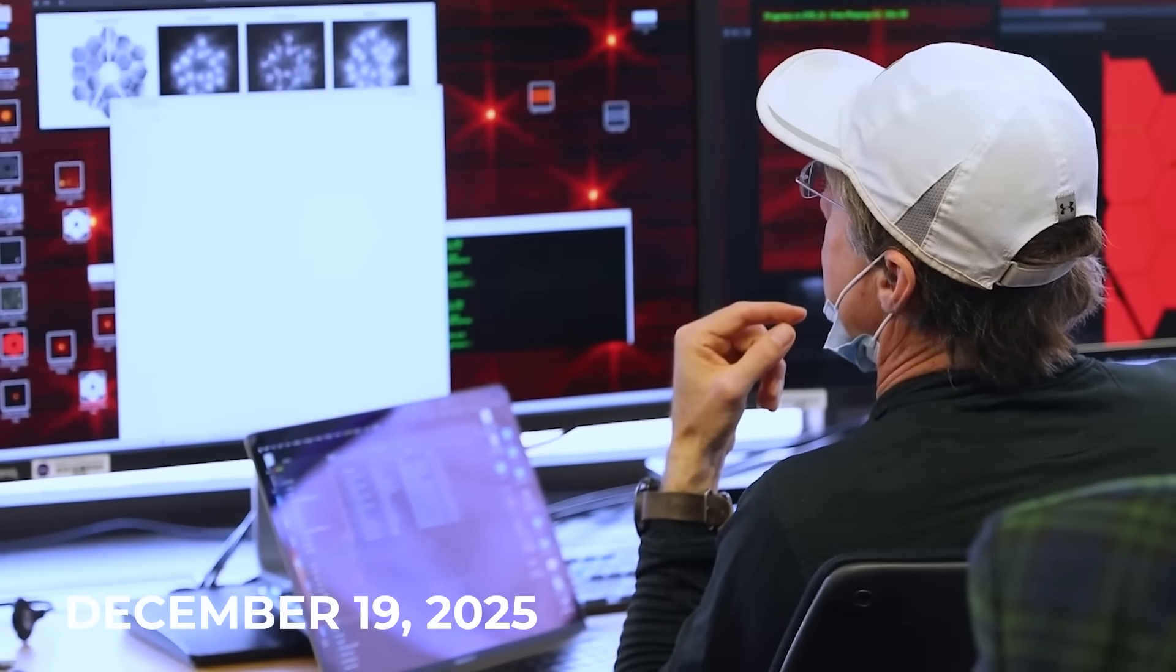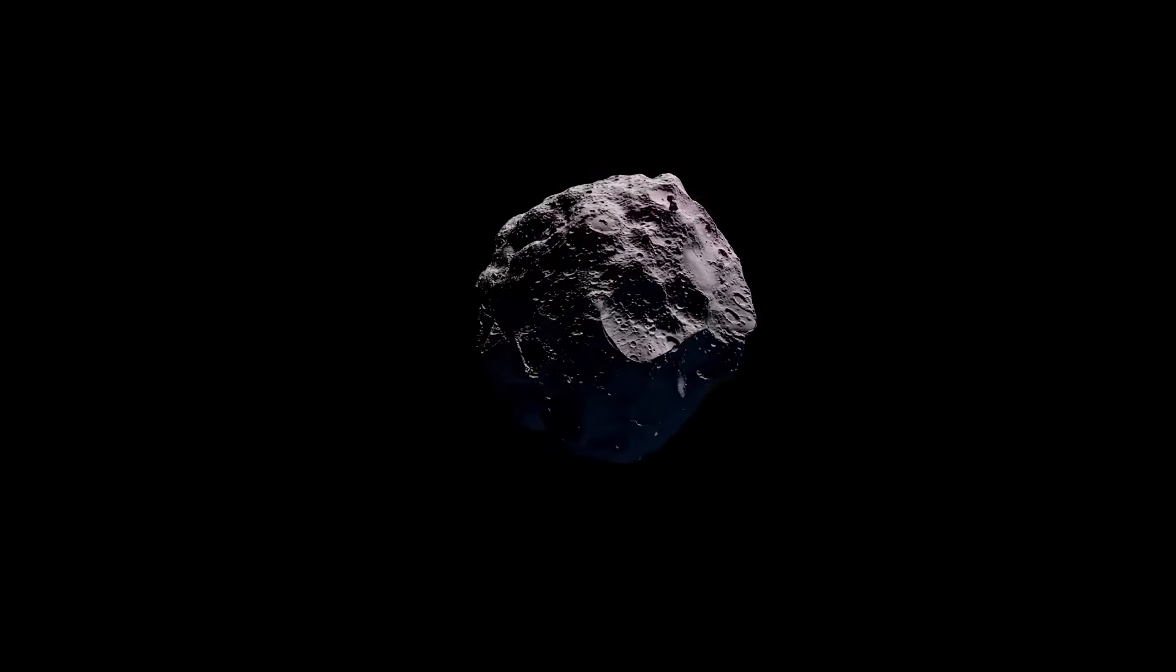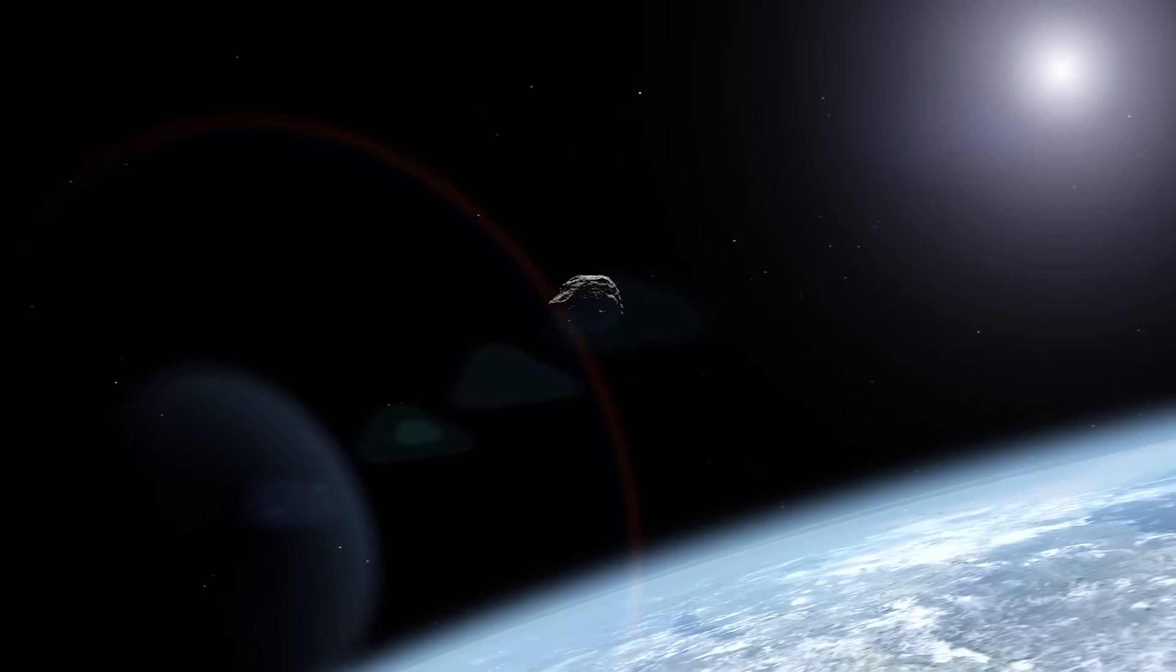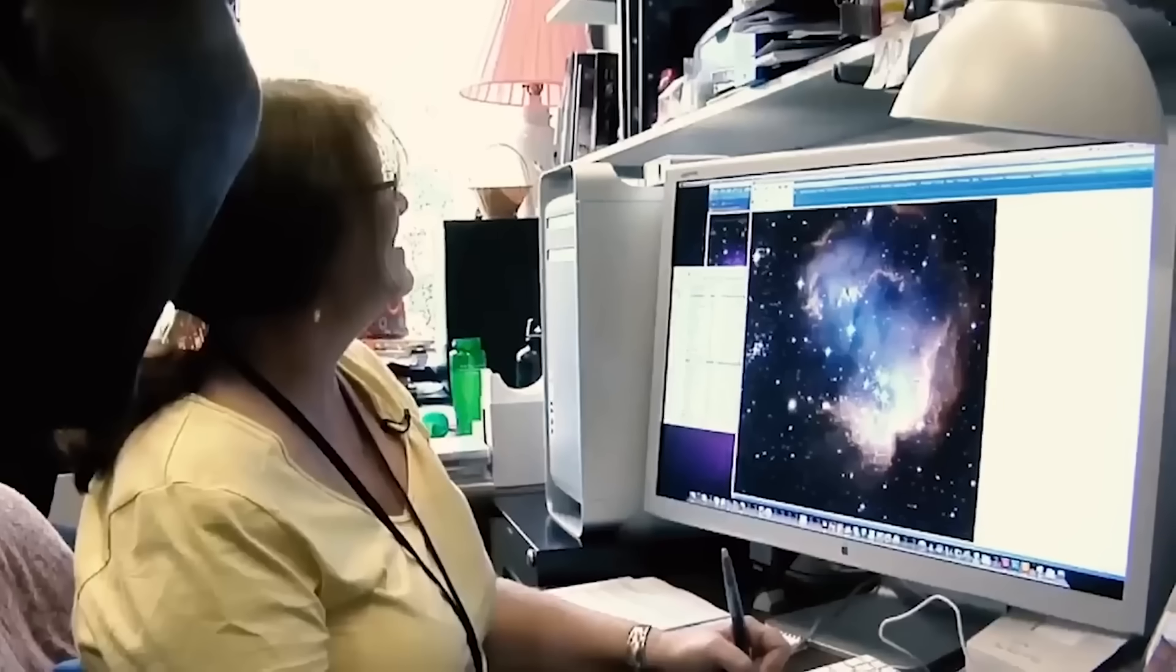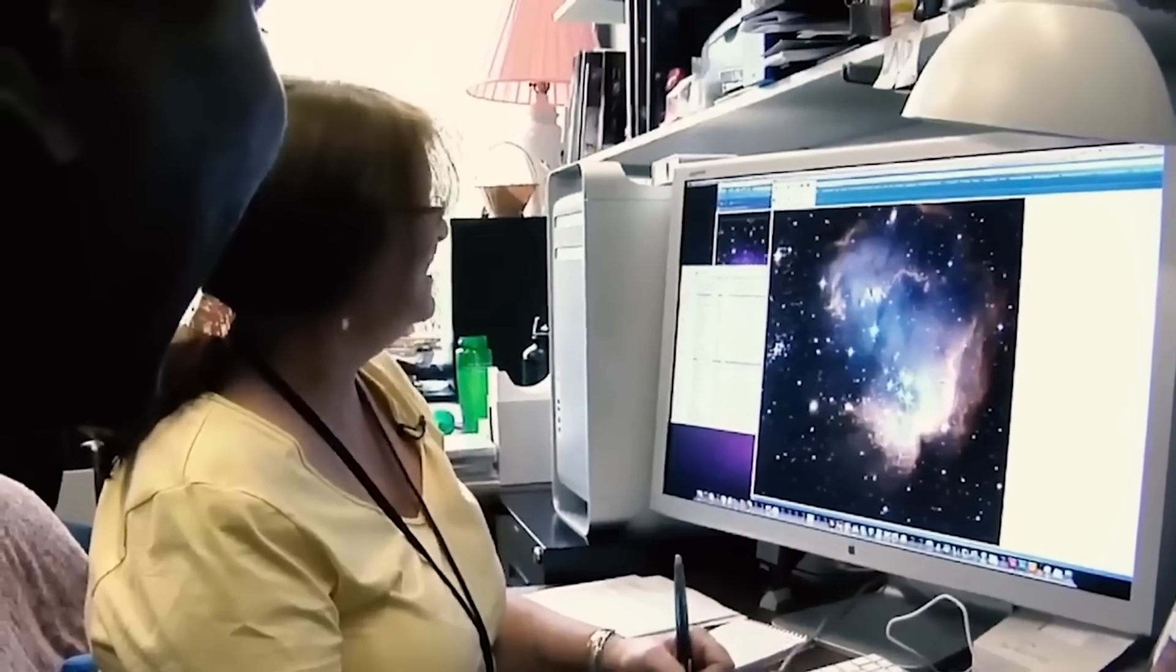On December 19th, 2025, when 3i/Atlas reaches its closest approach to Earth, the definitive answer will arrive. If it remains intact, this will be another clue that it is not a comet, and we may have to accept that it is something completely different.